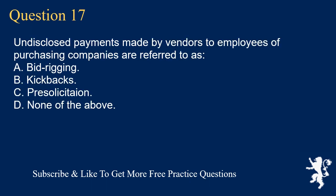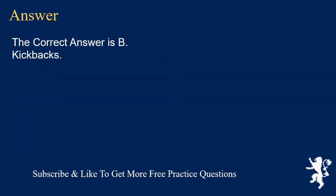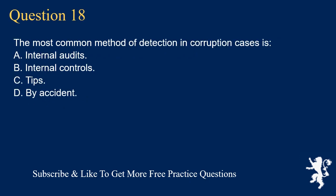Question 17: Undisclosed payments made by vendors to employees of purchasing companies are referred to as: A. Bid rigging. B. Kickbacks. C. Pre-solicitation. D. None of the above. The correct answer is B. Kickbacks.